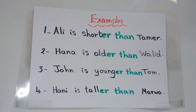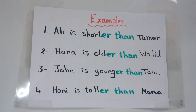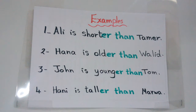Now we'll read these examples together. Number one: Ali is shorter than Tamer — علي أقصر من Tamer. Number two: Hana is older than Waleed — Hana أكبر في السن من Waleed. Number three: John is younger than Tom — John أصغر من Tom في السن. Number four: هاني is taller than مروه.